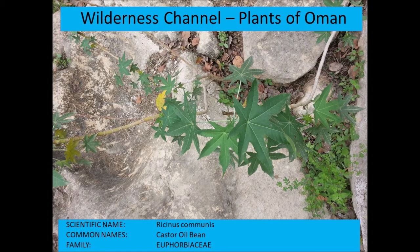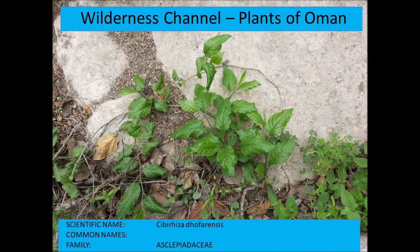Ricinus communis — the castor oil bean — from the Euphorbiaceae. Cibirhiza dhofarensis from the Cucurbitaceae — it has very large fleshy tubers that grow underground but a very small creeper on the surface. It is an endemic to Dhofar.